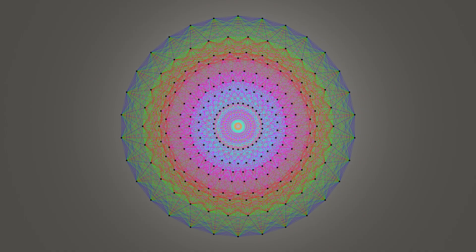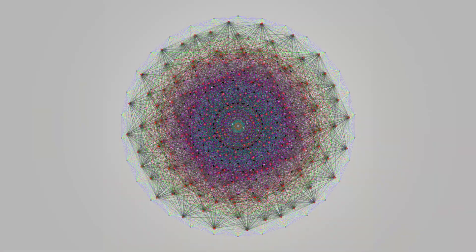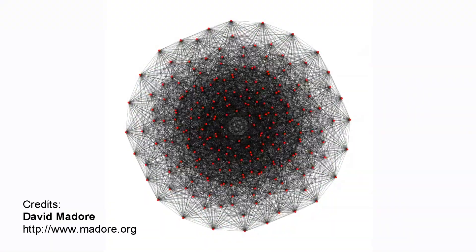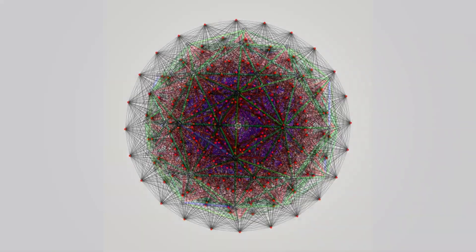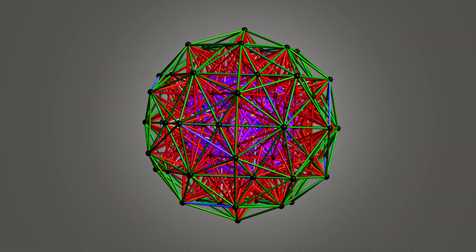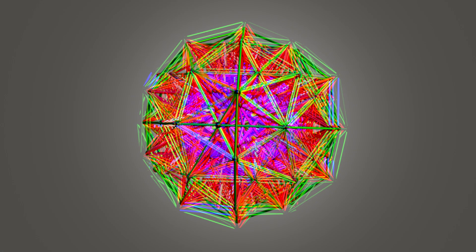This has sometimes been called the most beautiful mathematical structure in the world. What is it? Well, try to follow me here. This is a two-dimensional representation of a three-dimensional representation of a four-dimensional projection of an eight-dimensional object. If you follow that in your head, you're way smarter than me.